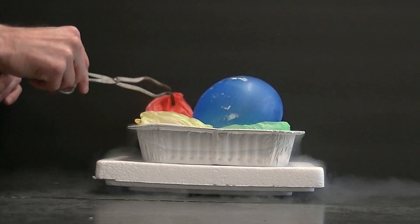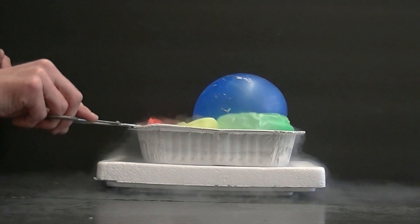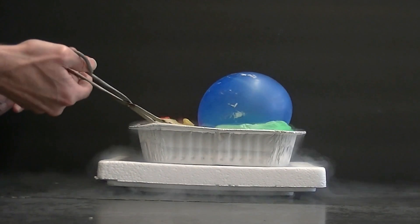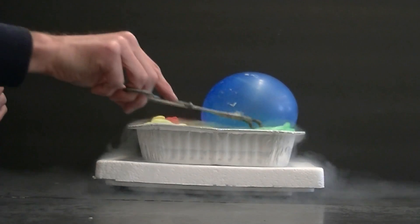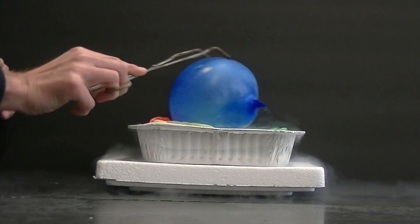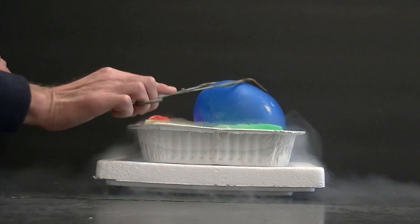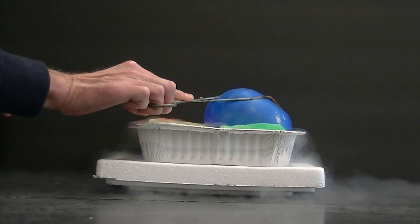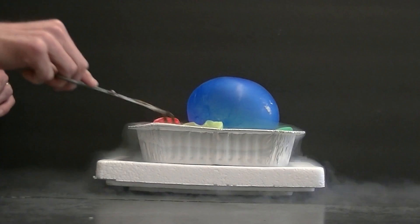That orange one has shrunk almost to zero volume. Same with this yellow one. Same with that green one. That blue one won't behave. Doggone it. I can't get it to shrink. I'm pushing it in there just like the other ones, and it will not shrink.